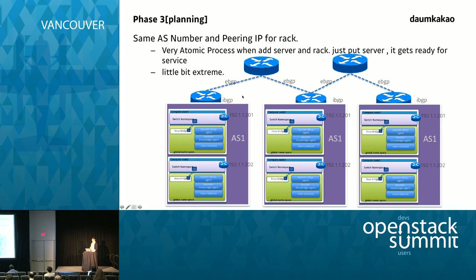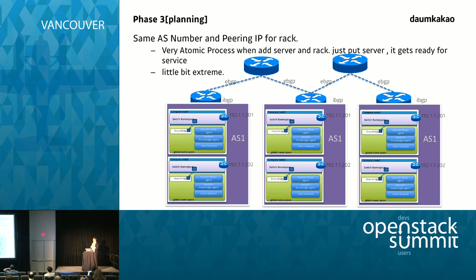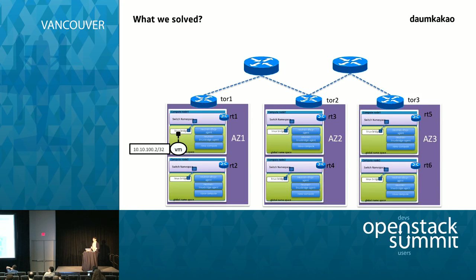The only drawback of the same peering IP approach is that you can't ping from outside to the peering IP, but you can go into the top-of-rack switch and ping from there. And getting even more extreme, we're thinking about adapting a tunneling algorithm to the BGP peering process, which means you could use public cloud without changing anything. We're actually testing for that.